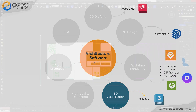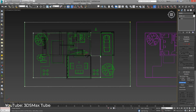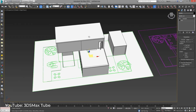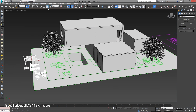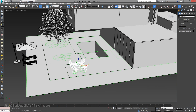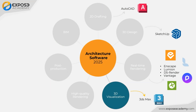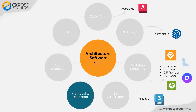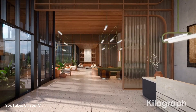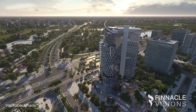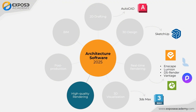Unfortunately, 3ds Max itself does not have a reliable rendering engine. That is why most 3ds Max users must also use additional rendering software, which falls into the high-quality rendering category. This software can perform photorealistic rendering even though it takes a little longer than the real-time rendering category. Currently, the most popular ones are V-Ray and Corona.